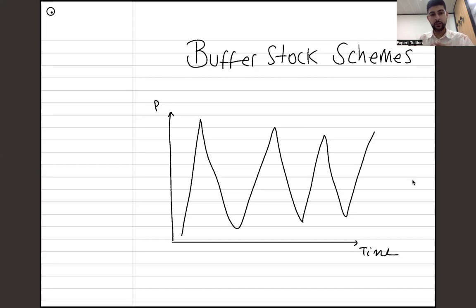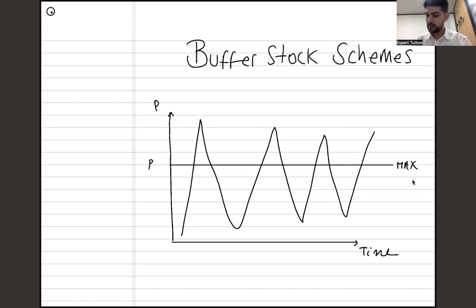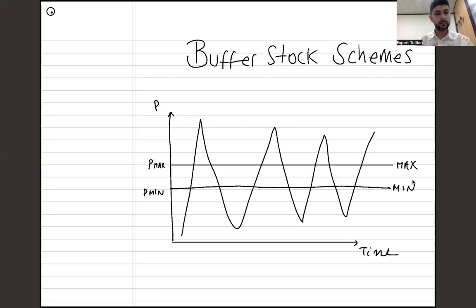What the government will try to do is minimize these fluctuations through a buffer stock scheme. They're going to set a maximum price — let's call it P max — and a minimum price. The range between the maximum and minimum is called the tolerance range; it's basically what we allow the price to go up and down between. Importantly, this is not the same as the maximum price scheme from theme one, where it was literally illegal to sell above or below those prices.